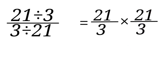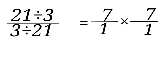Now let's reduce them to their lowest term. 3 divided by 3 is 1. 3 into 21 is 7. We come over here. 3 divided by 3 is 1. 3 into 21 is 7. So we have 7 over 1 times 7 over 1. That will give us 49 over 1 which is 49.